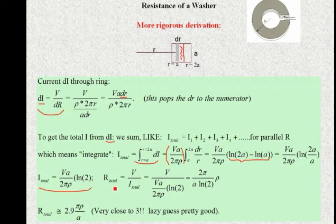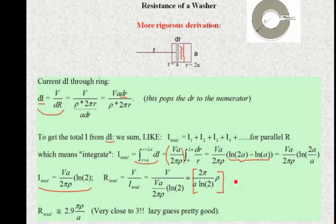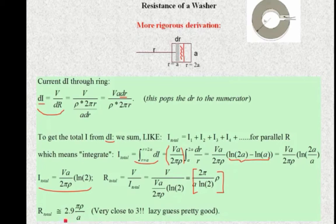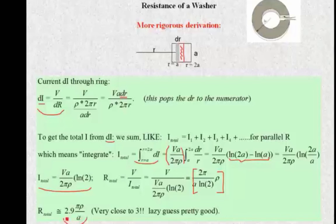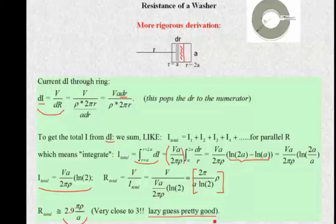So how do we find the resistance? Well, we just divide V by the I_total. The V's cancel out. Collecting the constants, we have this simple expression for the resistance for the entire washer. If you evaluate this constant, that comes out to be 2.9 times πρ over a. Before we got 3 by taking the approximation. So that was our lazy guess. And it turns out that that's pretty good.